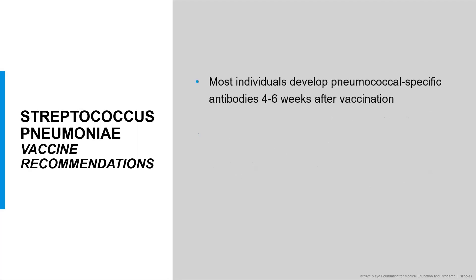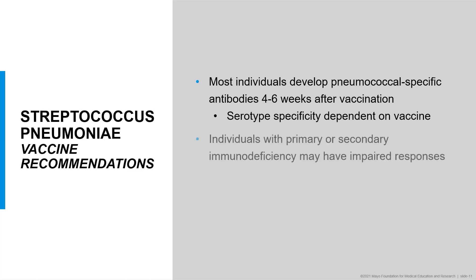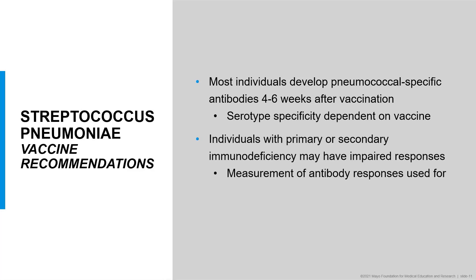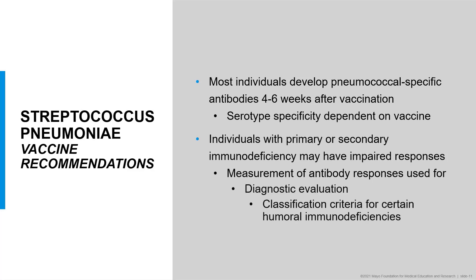Approximately four to six weeks after vaccination, most healthy individuals will develop pneumococcal specific antibodies with the serotype specificities dependent upon the specific vaccine. However, some individuals with primary or secondary immunodeficiencies may not demonstrate an adequate antibody response after vaccination. Measurement of antibodies against pneumococcal polysaccharides may be useful for diagnostic evaluation of suspected immunodeficiency. For some humoral immunodeficiencies, assessment of polysaccharide vaccine responses is included in the classification criteria. In addition, measurement of these antibodies can characterize the vaccine response in terms of how many serotypes the patient responded to, which serotypes, and the magnitude of their response.